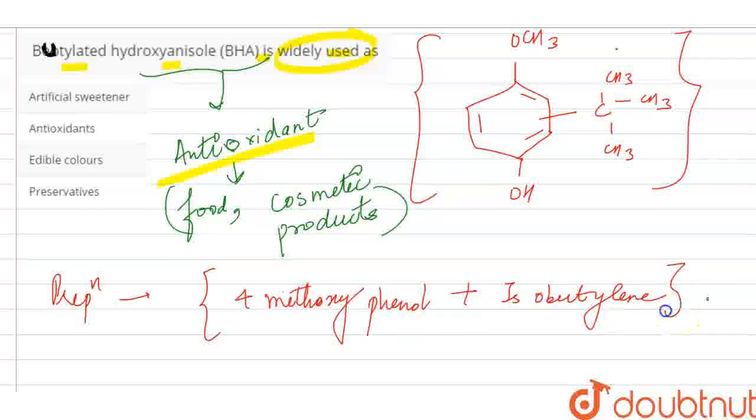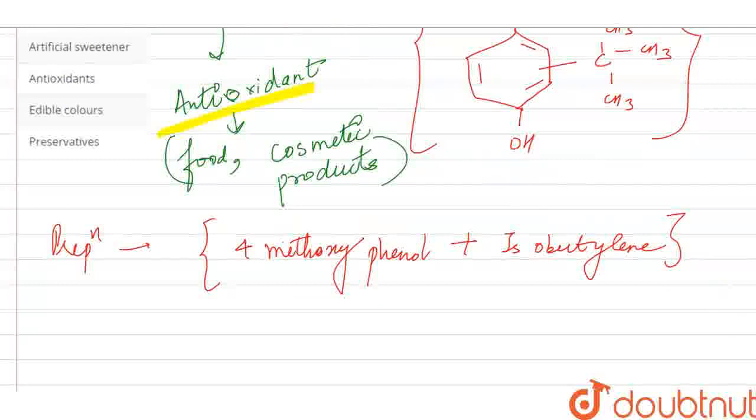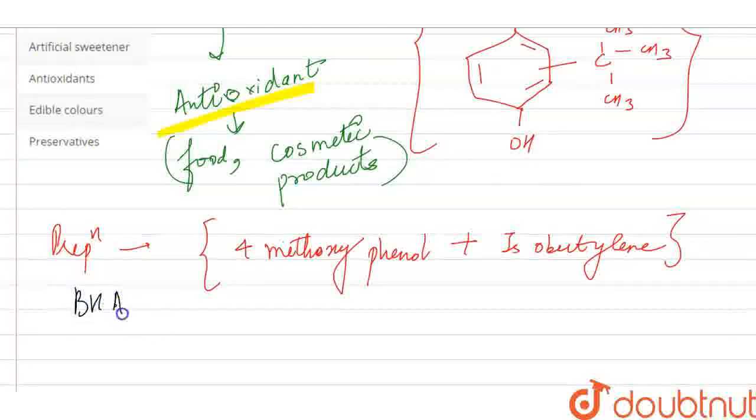Now I will talk about the physical properties. So BHA is a waxy solid which is used in medicines. I will take the name of medicines - so that is lovastatin.